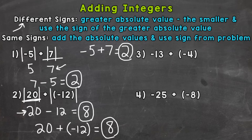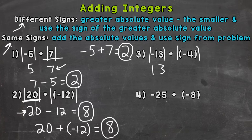On to number three, where we have negative 13 plus a negative 4. We have the same signs here. So we need to add the absolute values and use the same sign from the problem. The absolute value of negative 13 is 13, and the absolute value of negative 4 is 4. We add those: 13 plus 4 is 17. We use the sign from the problem — negative 13 and negative 4 are both negative — so our answer is negative 17.